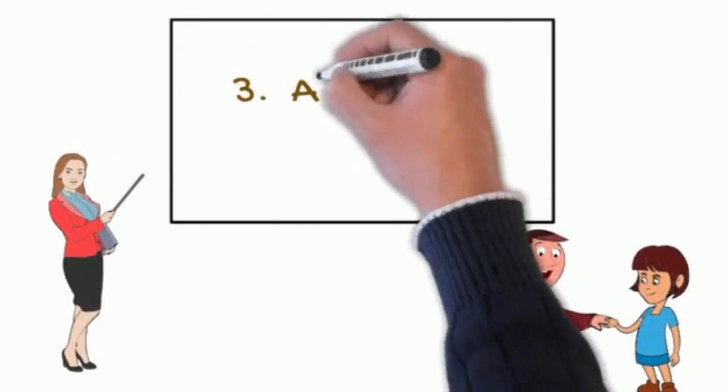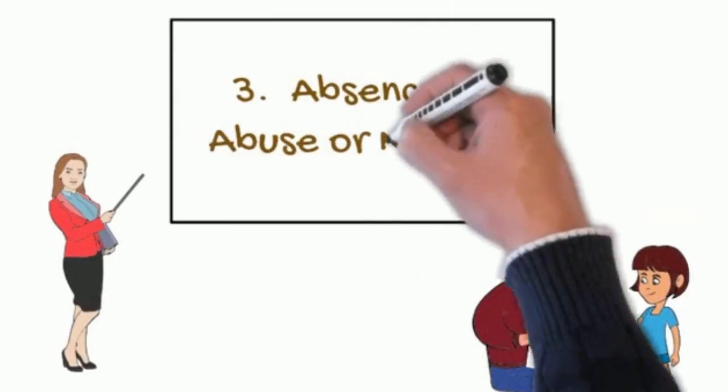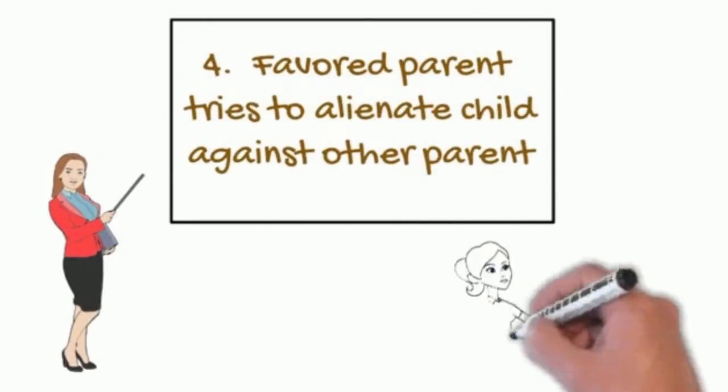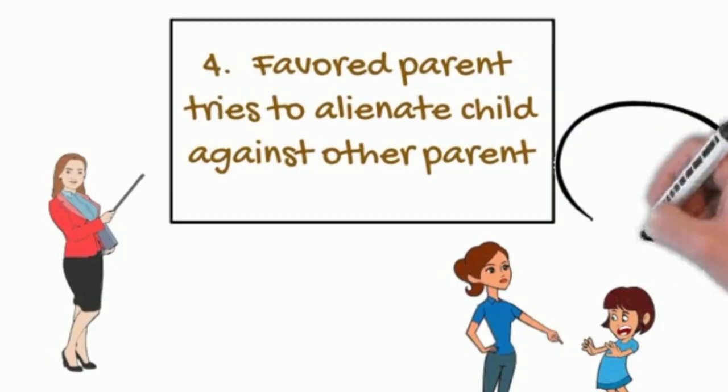Factor three, there's the absence of abuse or neglect. You need accurate ways of determining if a parent has been abusive and don't want to misidentify any abusive parent as an alienated parent. Factor four, the favored parent has engaged in many of the 17 primary parental alienation strategies that foster the child's unjustified rejection of the other parent.